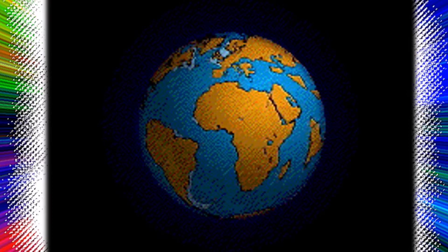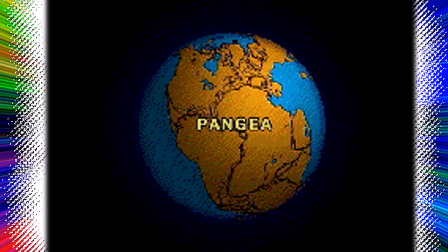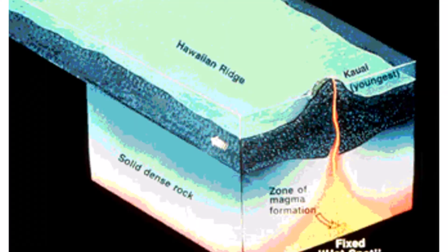Plate tectonics involves the movements of Earth's lithospheric plates relative to one another over the planet's weak asthenosphere. This activity changes the positions of all plates with respect to Earth's spin axis and the equator. To determine the true geographic positions of the plates in the past, investigators have to define their motions not only relative to each other but also relative to an independent frame of reference.